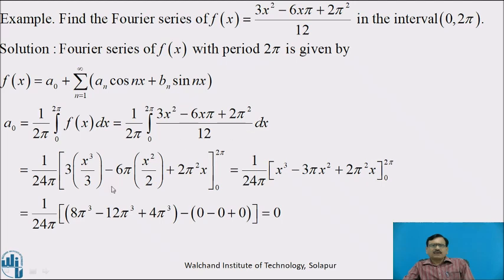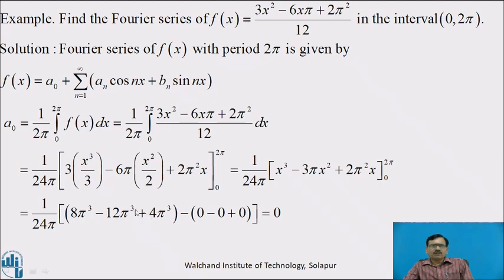Simplifying: (1/24π)[x³ − 3πx² + 2π²x] from 0 to 2π. Putting x = 2π: 8π³ − 12π³ + 4π³ = 0. For lower limit x = 0, all three terms are 0. Therefore 8π³ + 4π³ − 12π³ = 0, so the constant a₀ = 0.